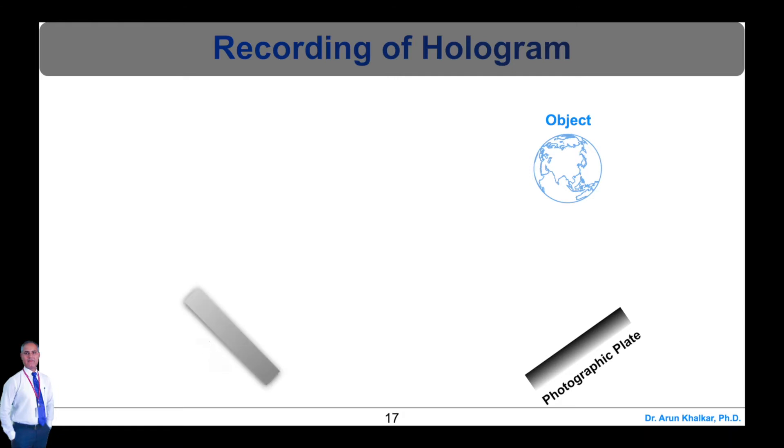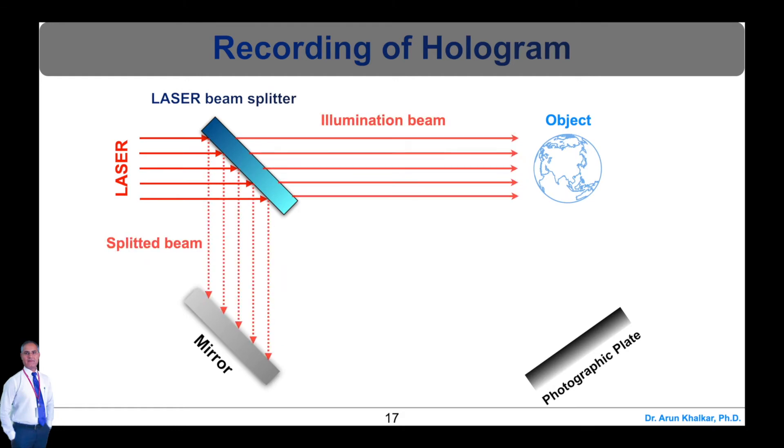A laser beam from the laser source is incident on a plane mirror or beam splitter. One part of the splitted beam, after reflection from the beam splitter, strikes on the photographic plate. This beam is called reference beam.